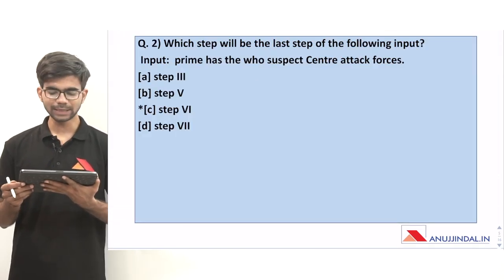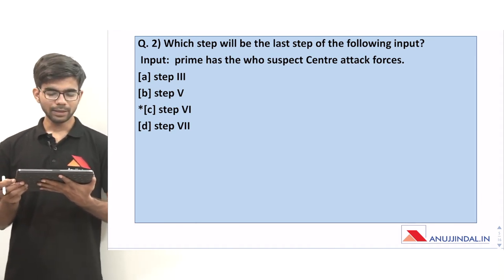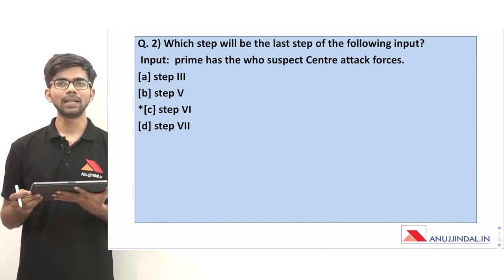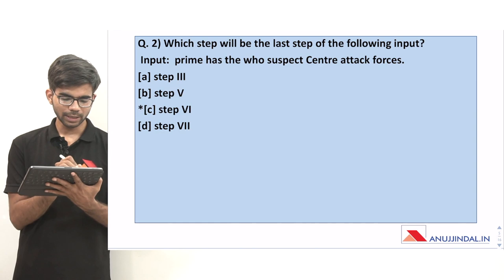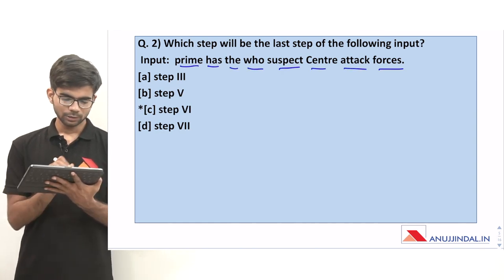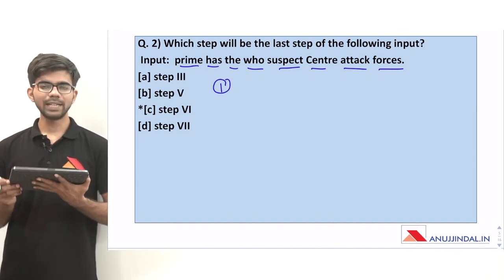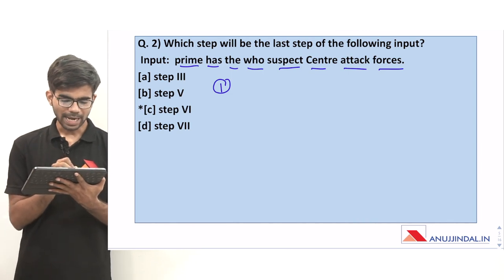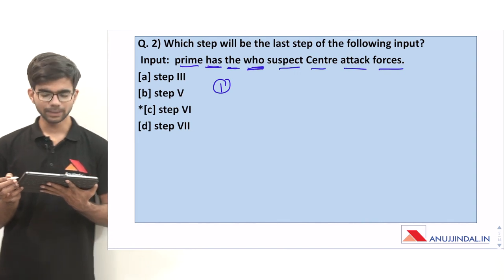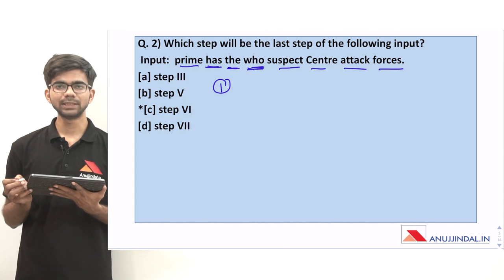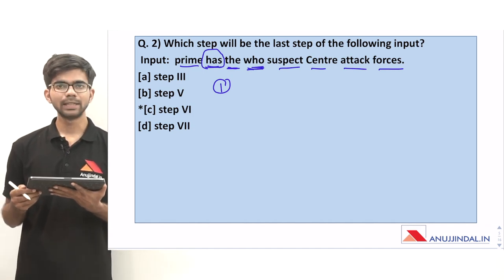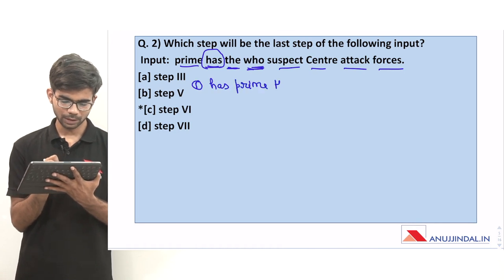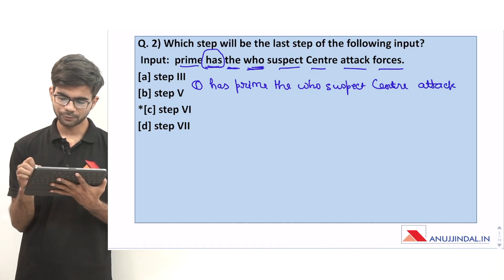Question 2: which step will be the last step of the following input? We have to apply the same logic. There are 8 words in this input. To find step 1, identify the word with the least letters. There are 3 words — 'has', 'the', and 'who' — each with 3 letters. Between these 3, which word comes first in the dictionary? 'Has' comes first because H comes before T and W. So our first step is: has, prime, the, who, suspect, center, attack, forces.